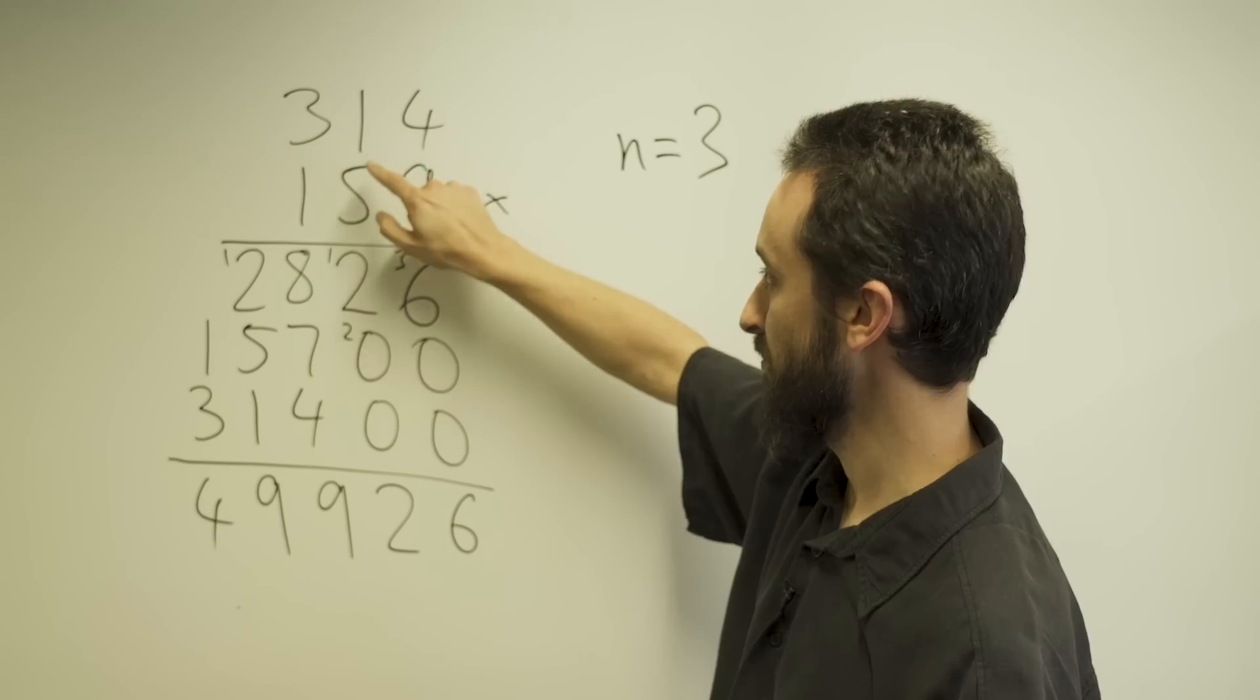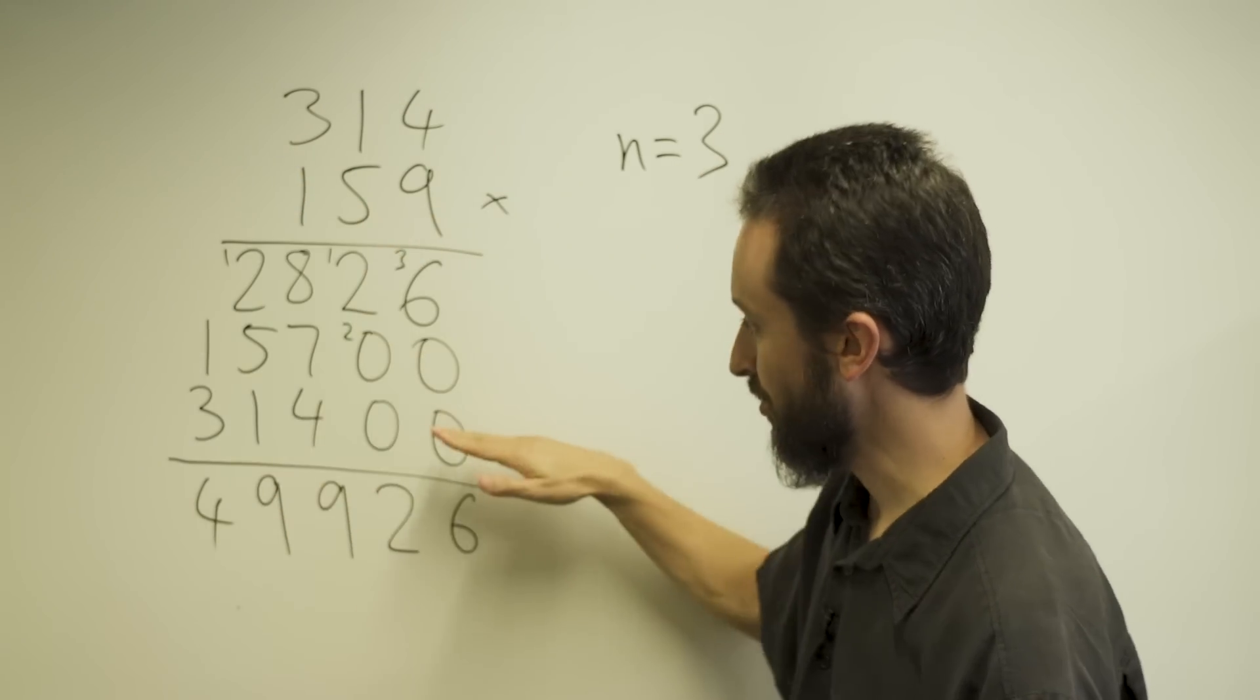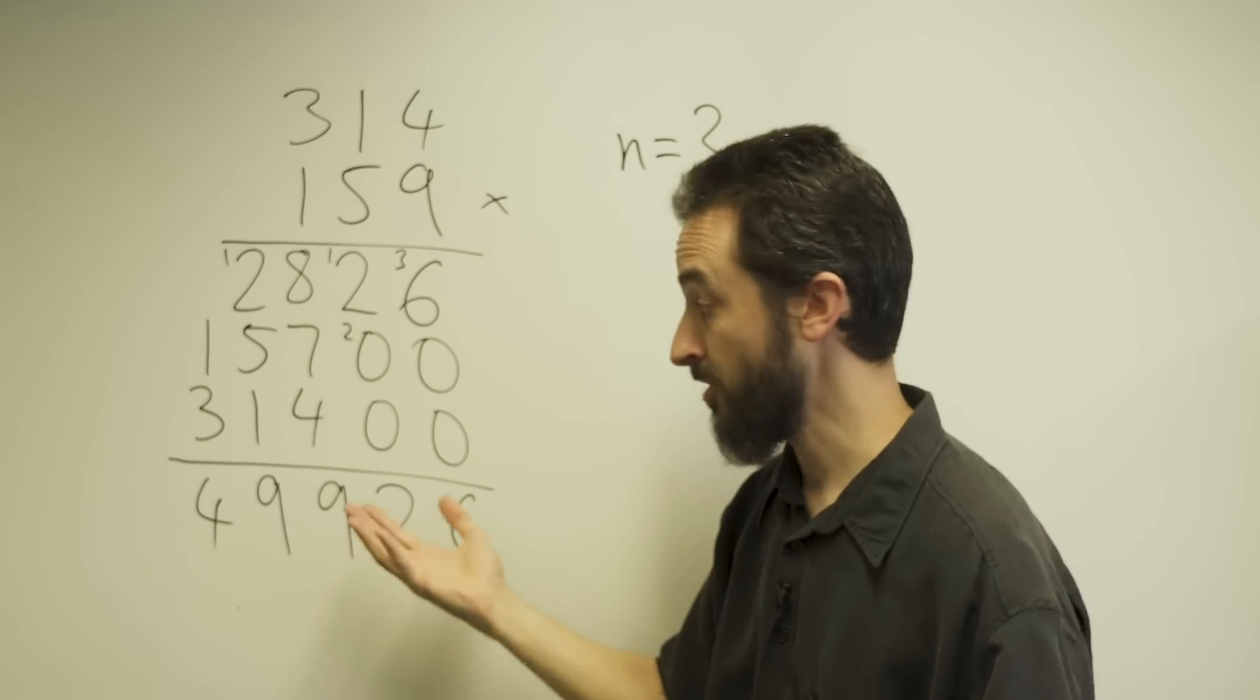Now I have to do the second digit, this 5. I have to do 5 times 4, 5 times 1, 5 times 3. There it is. And then the same for the last digit, there it is. And then I add up all the results.